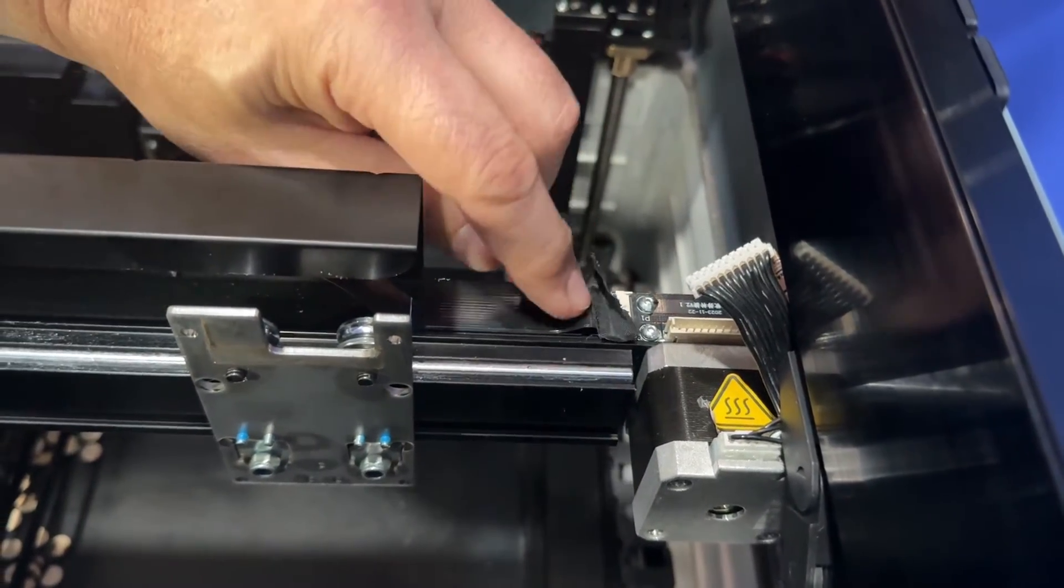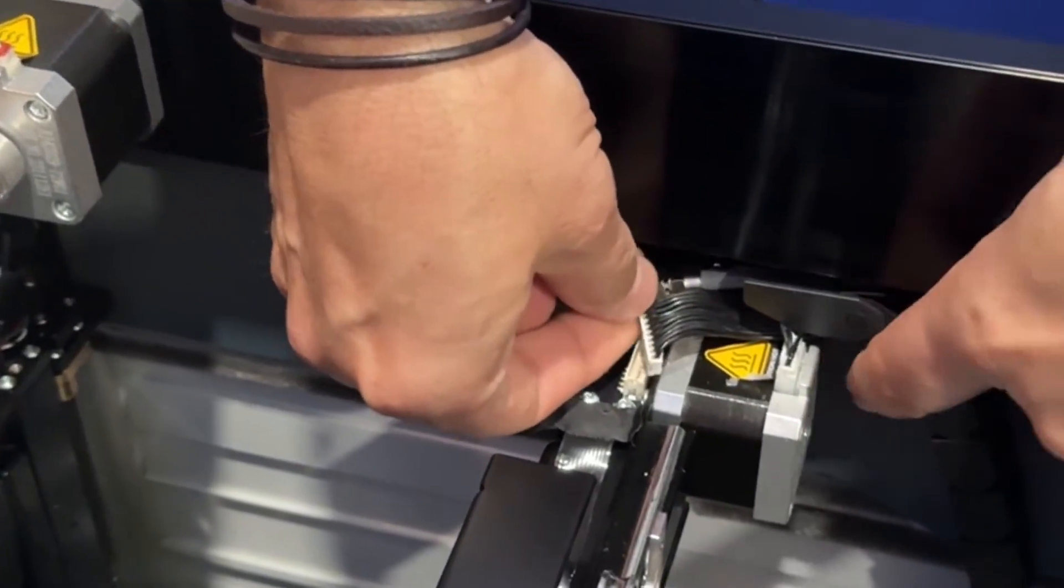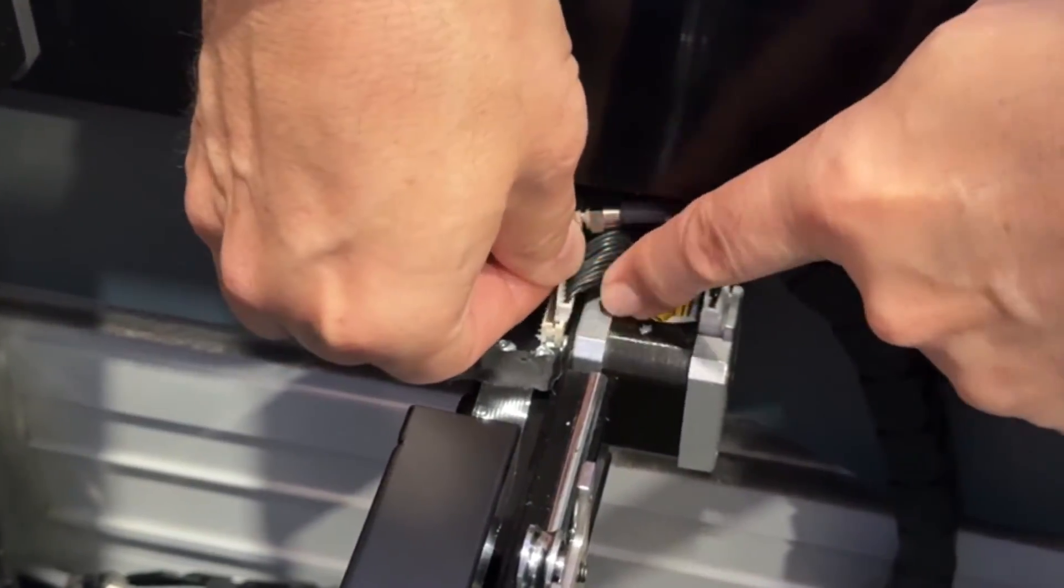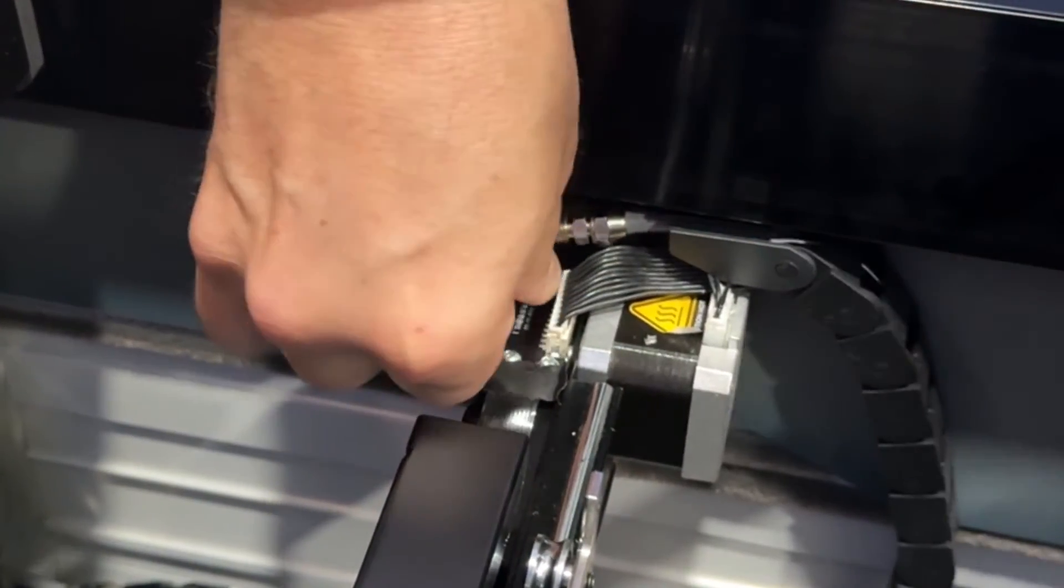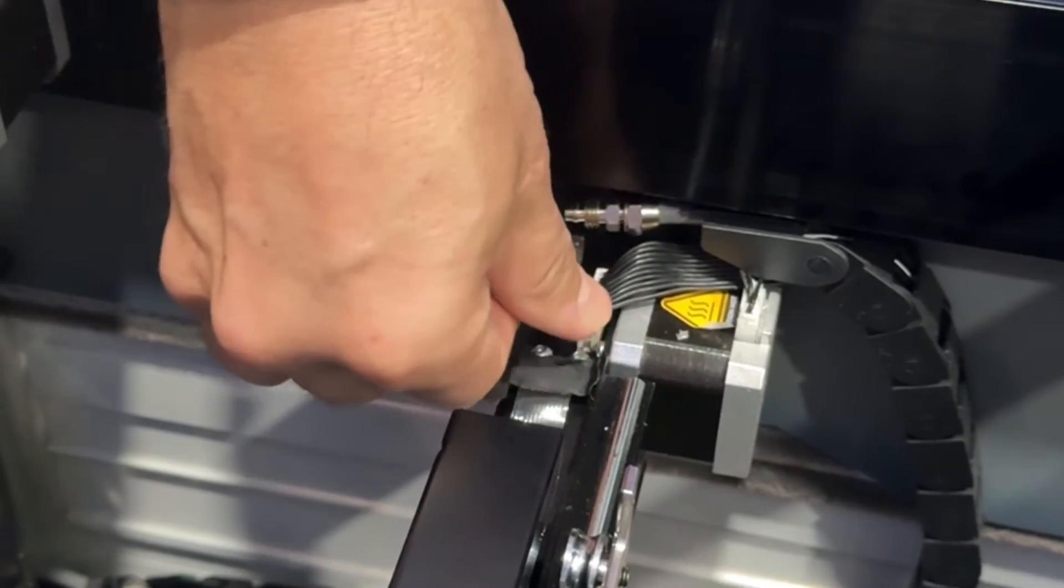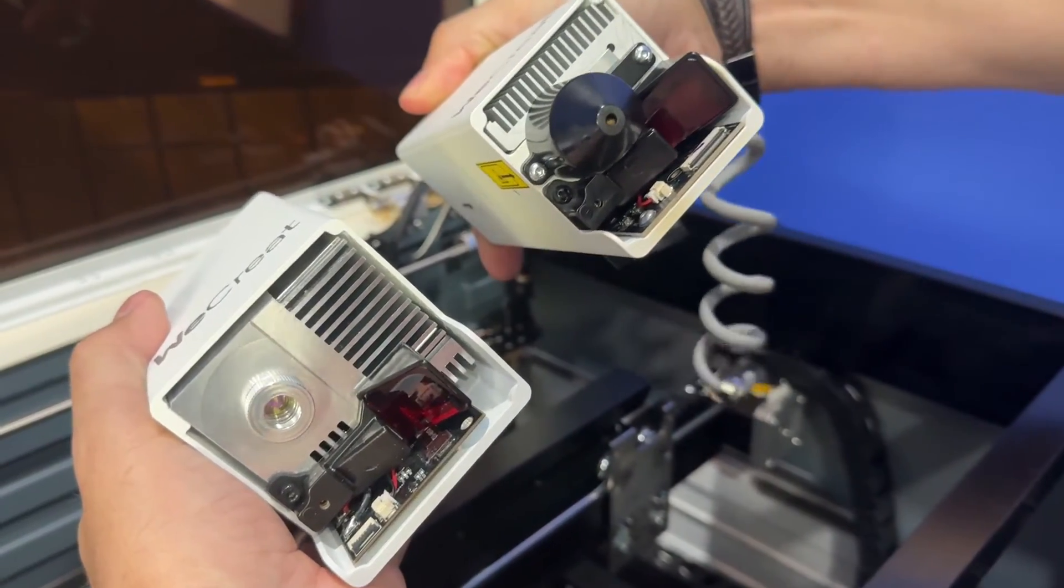So we're just going to connect that and then put your little tape back over it and then plug this back in the same way the other one was. Now, there might be a little bit of glue on there. You might have to kind of brush that off, clean that off so it slides right in there. And that's it. You are ready to go.